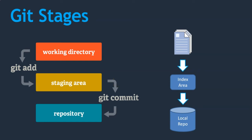Hello friends, welcome back. In the previous lecture we have seen how to create a repository on our local system and how to add files to it. In this lecture we are going to see what the different stages are in our Git repository. There is a certain procedure we should follow to add our content to the Git repository.